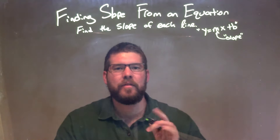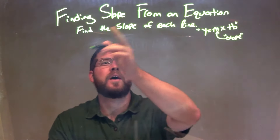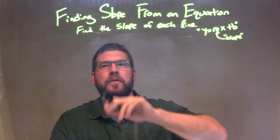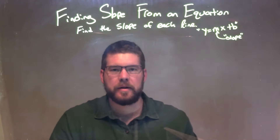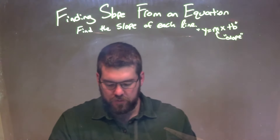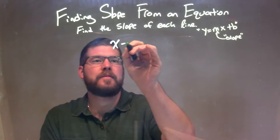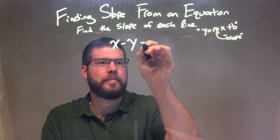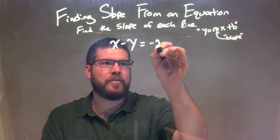Hi, I'm Sean Gannett, and this is MinuteMath, and today we're going to learn about finding slope from an equation. We're going to find the slope of each line. So if I was given this equation: x minus y equals negative 2.